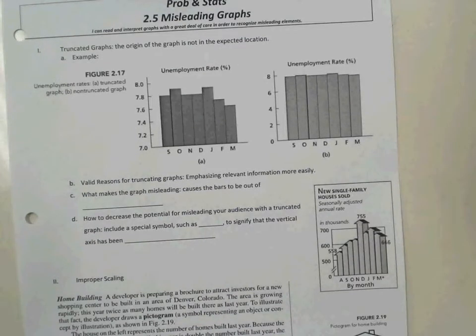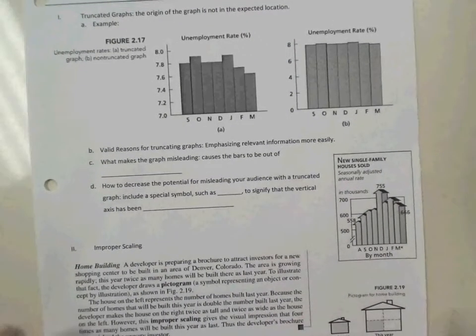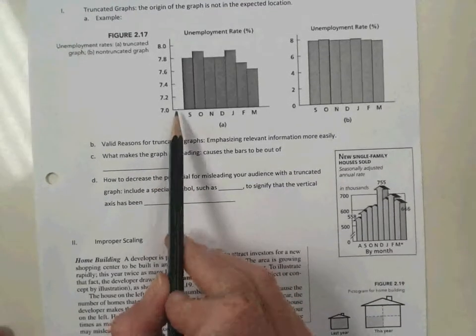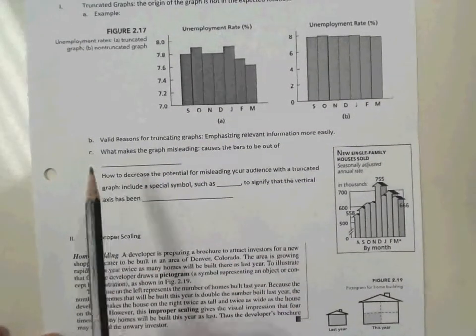A is clearly easier to look at and maybe distinguish between those different months and the unemployment rates. However, A actually is the misleading graph in this case. And that's because the graph is truncated. And we'll read about this.